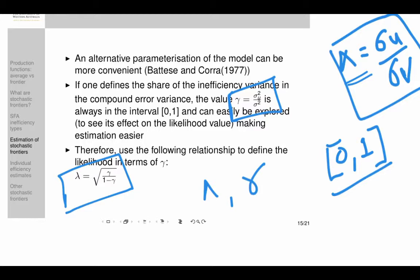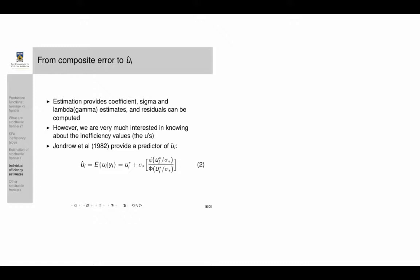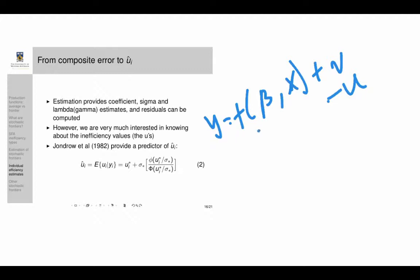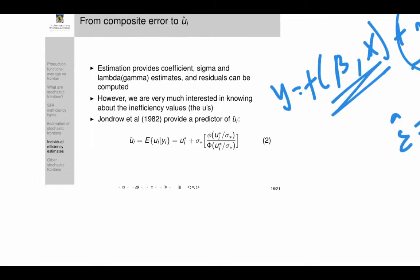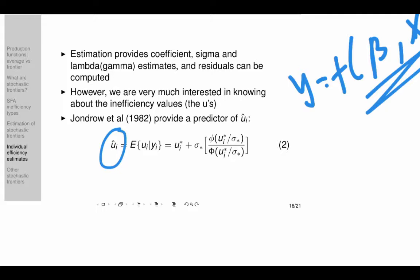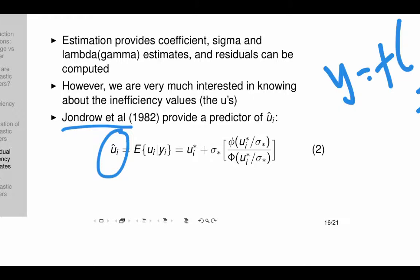This discrepancy is common when using advanced models where some software fails and you must switch to another. Once MLE estimates the beta values and the curve is established, the composite error is easily calculated. The challenge is splitting it into inefficiency U and noise V. Since the 1980s, the Jondrow method provides a formula for the expected value of U_i given the observed output, using σ and the composite error along with the relevant variance components.